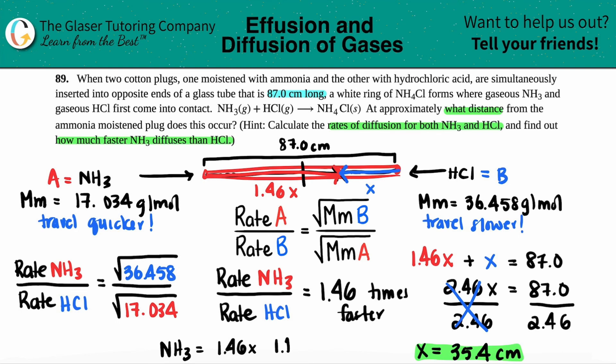Now we have 1.46 times 35.4. 1.46 times 35.4 gives us 51.7 centimeters. And that is your final answer. So what distance from the ammonia? 1.46x was just 51.7 centimeters.